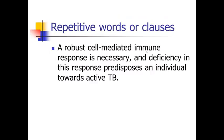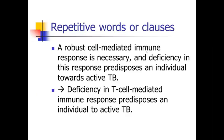Here's an example of some repetition, a repetitive clause. A robust cell-mediated immune response is necessary and deficiency in this response predisposes an individual towards active TB. Notice how the two parts of that sentence actually really say the same thing. One says it's necessary and the other says if you don't have it, you're more likely to get TB. We can add at that and get rid of the repetition by just saying, deficiency in T cell mediated immune response predisposes an individual to active TB. We didn't really need the first part of that sentence.